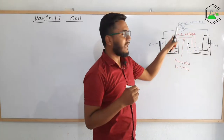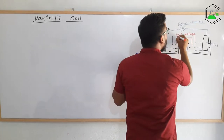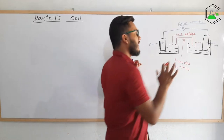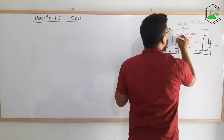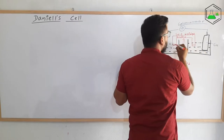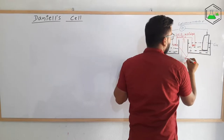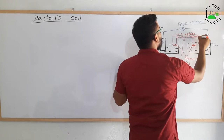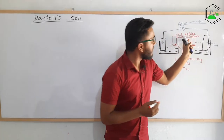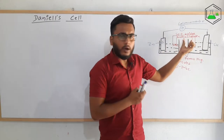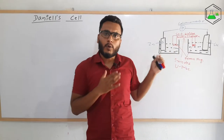The salt bridge is called a bridge because it is joining the two beakers, and inside it a salt is kept — any type of salt like potassium chloride, potassium nitrate, potassium sulfate, or ammonium nitrate. Here K₂SO₄, that is potassium sulfate, is kept. The two ends of the tube are made of porous plug material. Gelatin is also added so that the mixture allows only ions to pass from one beaker to another without undergoing a chemical reaction.